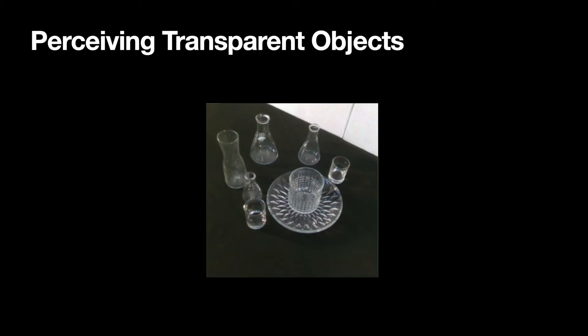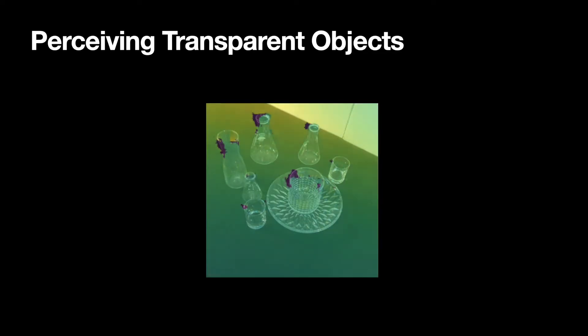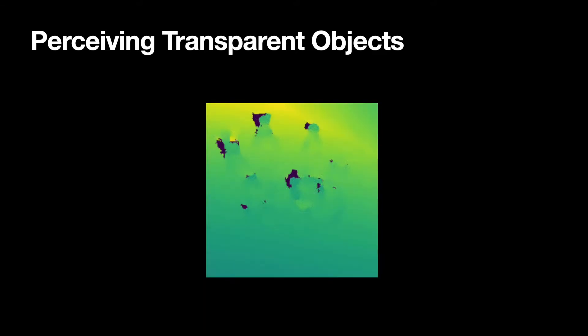Humans can easily detect, localize, and infer the geometry of such objects. In contrast, this is how a robot using a depth camera would perceive this scene. The objects are almost completely invisible.